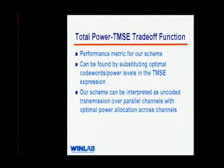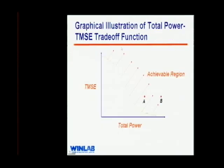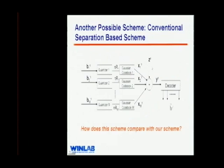For the comparison, after finding optimal codewords and power levels and substituting into the TMSE expression, we get a total-power versus TMSE tradeoff curve. Our scheme can be interpreted as uncoded transmission over parallel channels with optimal power allocation. The achievable region is to the right and top of our tradeoff curve — if a point can be achieved with certain total power, increasing the budget always yields another achievable point.